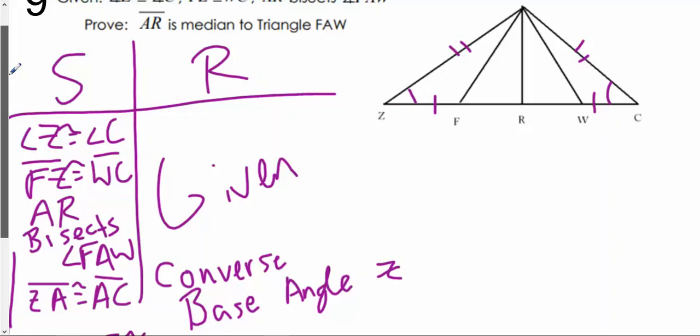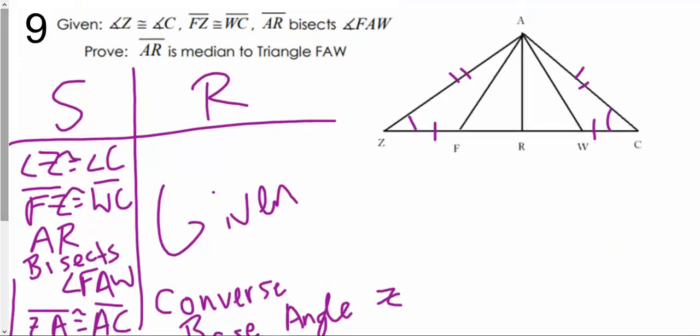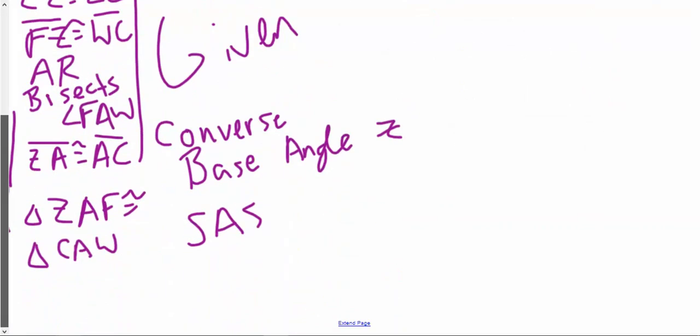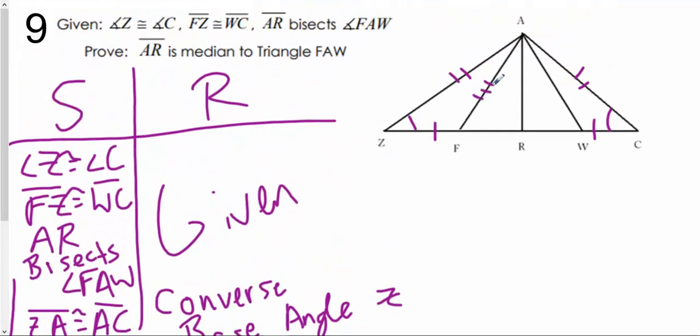Our goal here is to figure out the AR's a median. So I have to prove something regarding triangles FAR and WAR. So as long as I can prove those, then we're good to go. And the way I'm going to start proving those is by saying that these two angles are congruent. Actually, I don't even have to do that. I'm going to state that the side lengths are congruent because that's much quicker. I'm going to say that segment AF has to be congruent to segment AW by CPCTC.